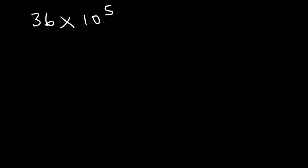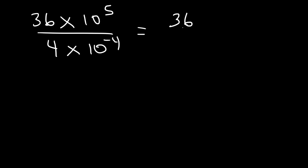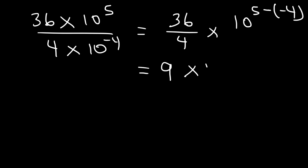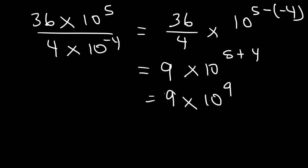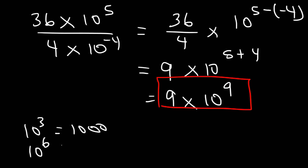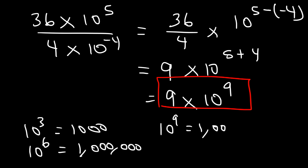Let's work on another example: 36 times 10 to the 5 divided by 4 times 10 to the negative 4. First, divide 36 by 4, then subtract the exponents. 36 divided by 4 is 9, and 5 minus negative 4 is the same as 5 plus 4, which is positive 9. So the answer is 9 times 10 to the 9. By the way, 10 to the 3 is a thousand, 10 to the 6 is a million, and 10 to the 9 is a billion — so this number is really 9 billion.